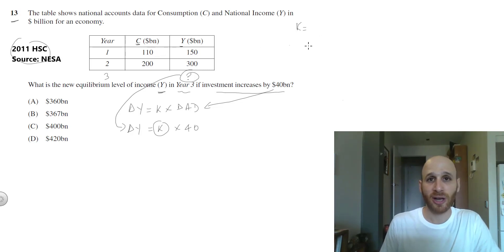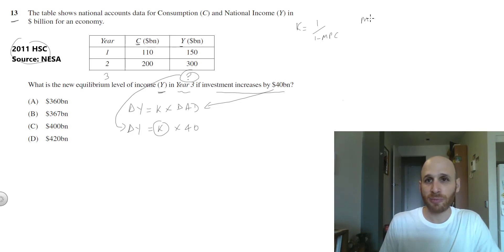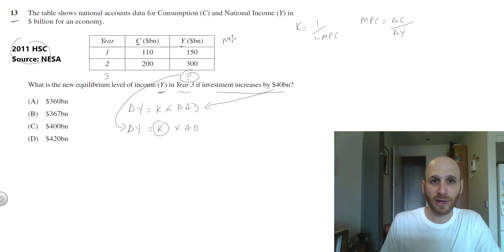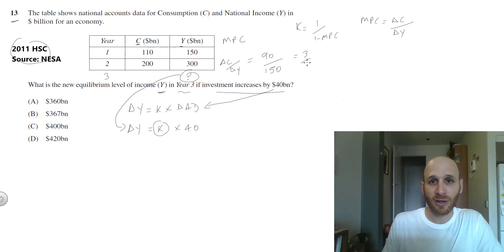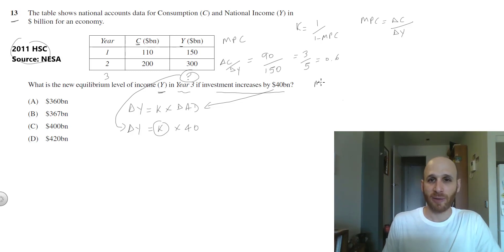Since I've got consumption data, I'm going to focus on MPC. The marginal propensity to consume equals the change in consumption over the change in income. The change in consumption between the years would be 90, and the change in income would be 150. That gives me 90 over 150, which is 3 on 5, which equals 0.6. So MPC equals 0.6.